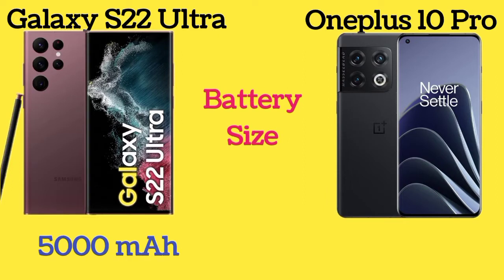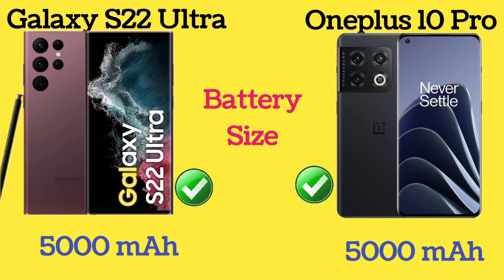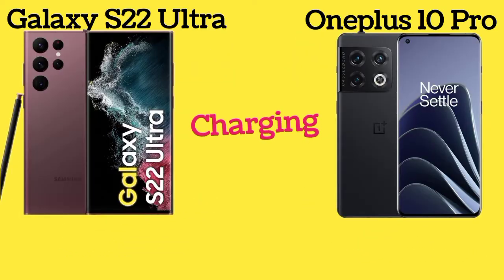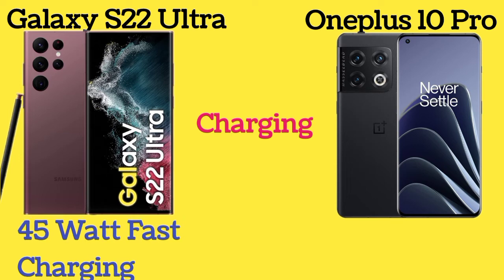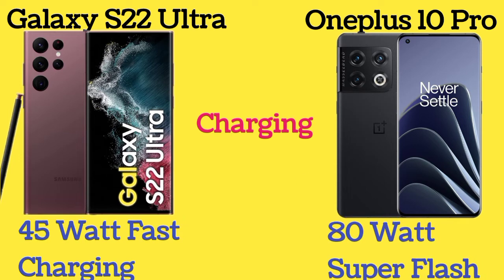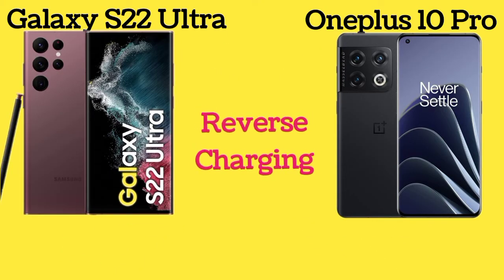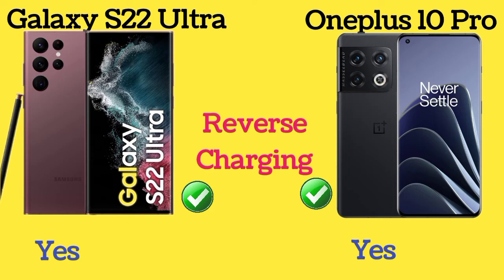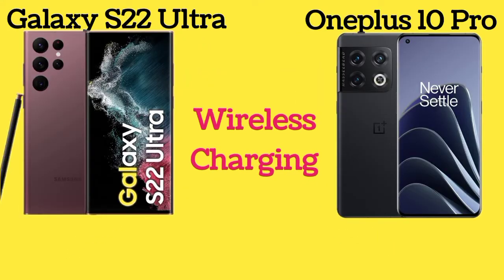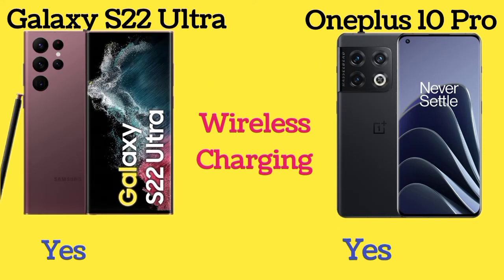Galaxy S22 Ultra and OnePlus 10 Pro both have the same 5000mAh battery capacity. Galaxy S22 Ultra has 45W fast charging and OnePlus 10 Pro has 80W Super Flash Charge. Both phones support reverse charging and wireless charging.